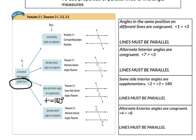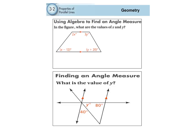The last one is the Alternate Exterior Angles Theorem. It says, again, if the transversal intersects two parallel lines, then alternate exterior angles are congruent to each other. So angle four and angle eight are congruent to each other — they'll be the same measure. It's only possible if the lines are parallel. With that being said, let's take a look at some examples.